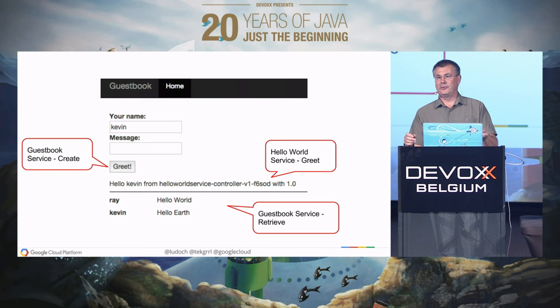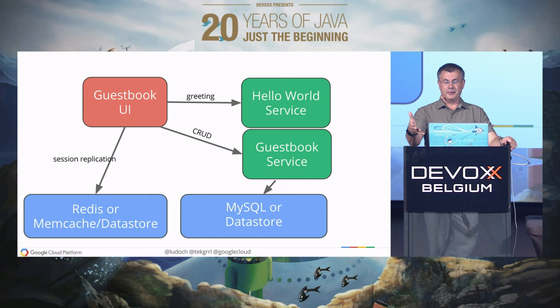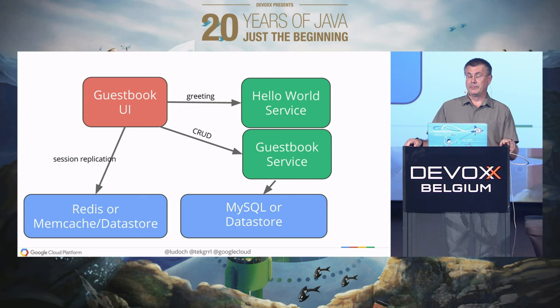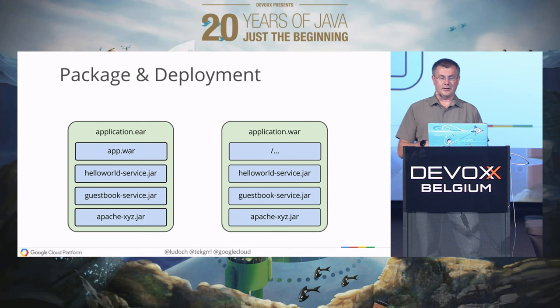The point is not really to explode this app into multiple parts, but to find the logical services from a given app. The UI is interacting with two services: the hello world service and the guestbook service. Those services can rely on shared resources like MySQL or Cloud Datastore, as well as Redis for caching or Memcache.